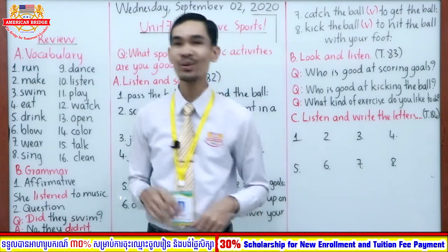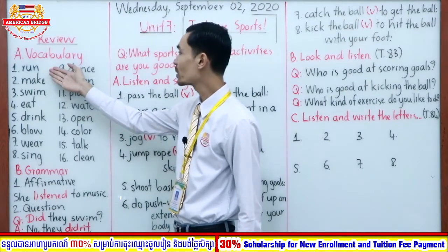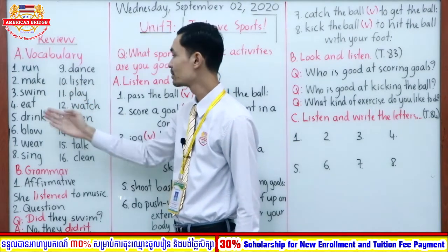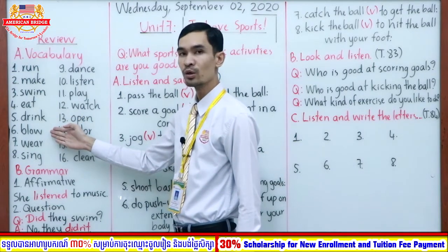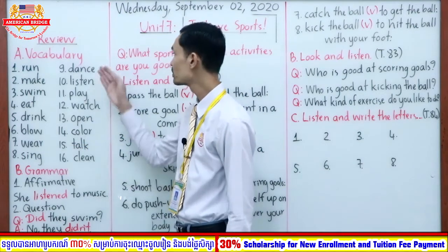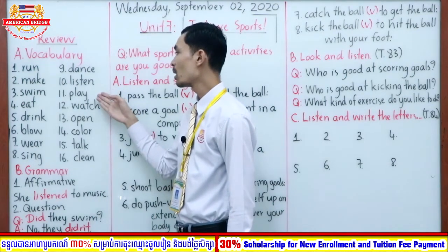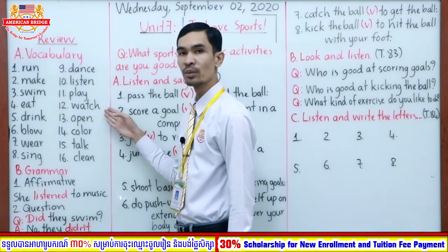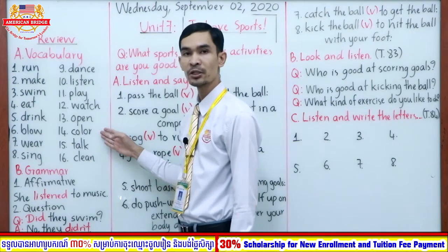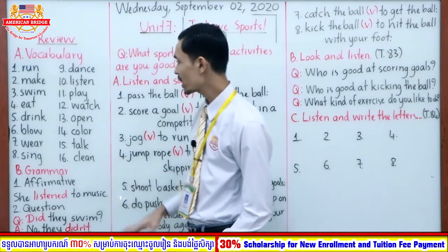Okay, can you remember? Here are the 16 words from Unit 6: run around, make snacks, swim, eat, drink, blow up balloons, wear costumes, sing, dance, listen to music, play games, watch a movie, open presents, color pictures, talk to friends, clean up. Okay, there are 16 words in Unit 6.